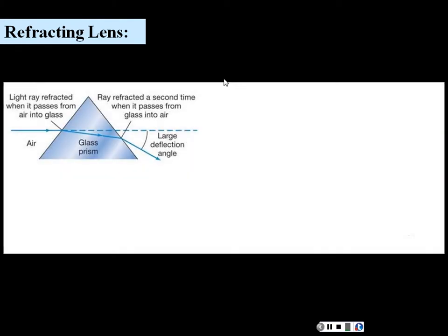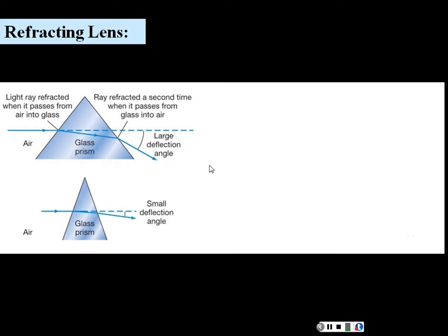Here's how a refracting lens works. If we have glass and light passes from air or a vacuum into another substance, it tends to slow down, and as it slows down it bends. In a glass prism, we have one bend and then another bend as it proceeds back into air. We can actually deflect this light to another location. Depending on how thick the glass is, we can alter how much we bend the light — the thicker it is, the more it bends; the thinner it is, the less it bends.